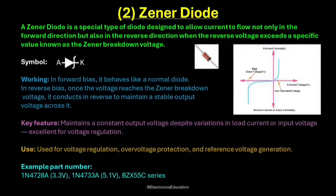For example, if the Zener diode has a breakdown voltage of 5.1 volts, it will maintain about 5.1 volts across it, even if the input voltage or load current varies. The key feature of the Zener diode is its ability to maintain a constant output voltage, despite variations in input voltage or load conditions. Because of this, it is widely used as a voltage stabilizer in electronic circuits.